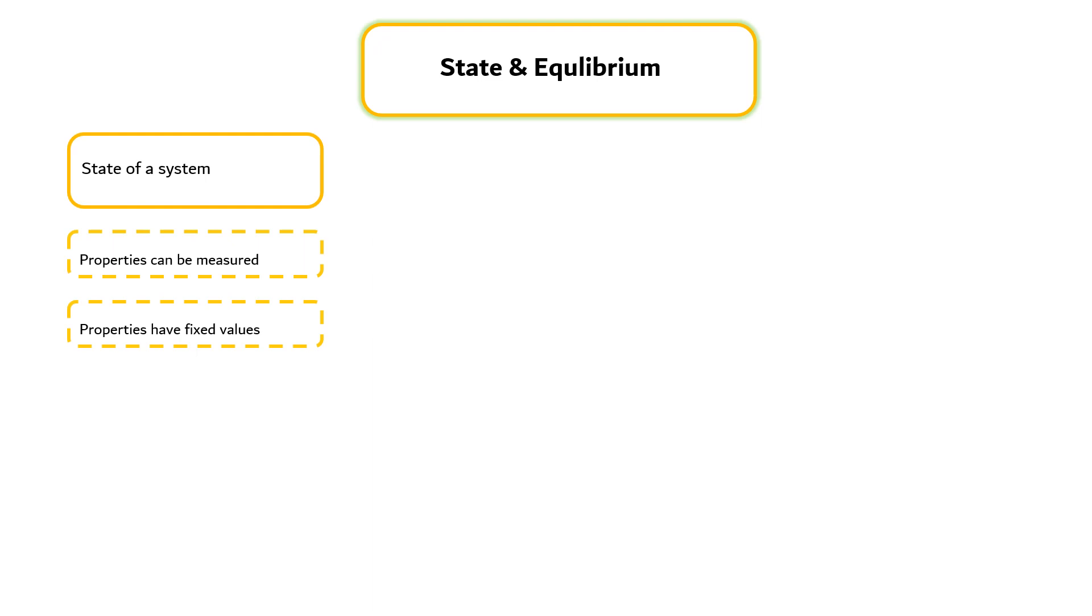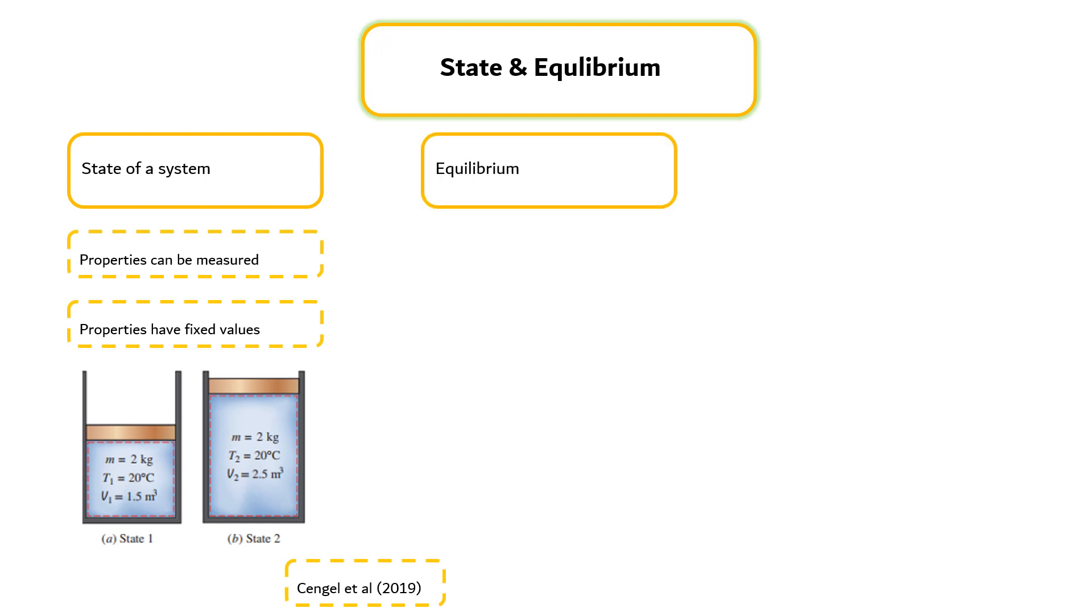Thermodynamics deals with equilibrium states. The word equilibrium implies a state of balance. In an equilibrium state, there are no unbalanced potentials or driving forces within the system. A system in equilibrium experiences no changes when it is isolated from its surroundings.